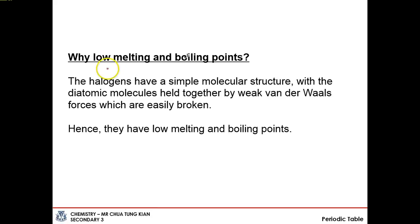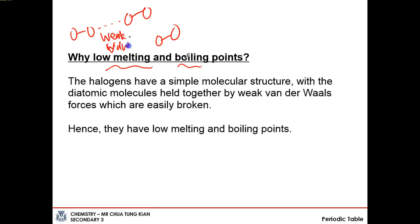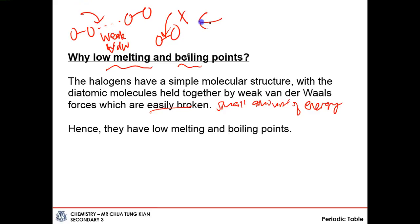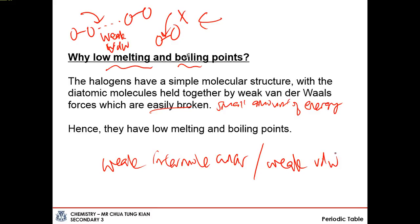Important: the low melting and boiling points of halogens are due to the weak Van der Waals forces between the molecules, not the breaking of strong covalent bonds between atoms. We are breaking the weak intermolecular forces between molecules, not the strong covalent bonds within each molecule. This is a very common misconception made by many students — take note that we break the weak Van der Waals forces, also called weak intermolecular forces, between the halogen molecules.